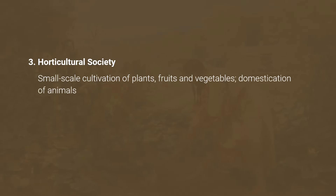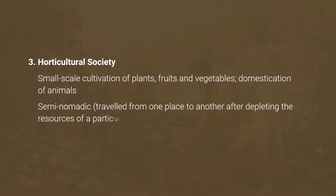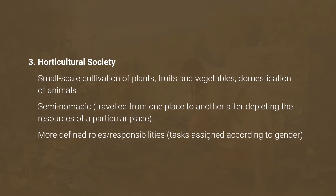The Horticultural Society primarily engaged in the small-scale cultivation of plants, fruits, and vegetables, and the domestication of animals. It was semi-nomadic, traveling from one place to another after depleting the resources of a particular place. Its roles or responsibilities were more defined with tasks assigned according to gender — women did the domestic work, while men farmed and hunted.